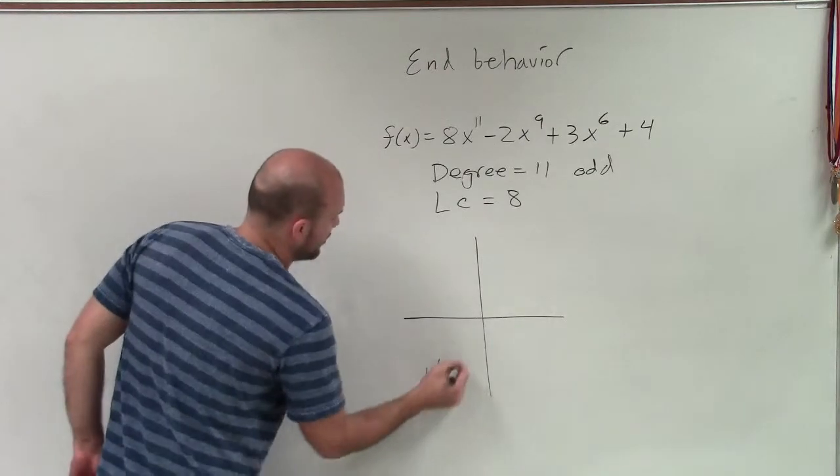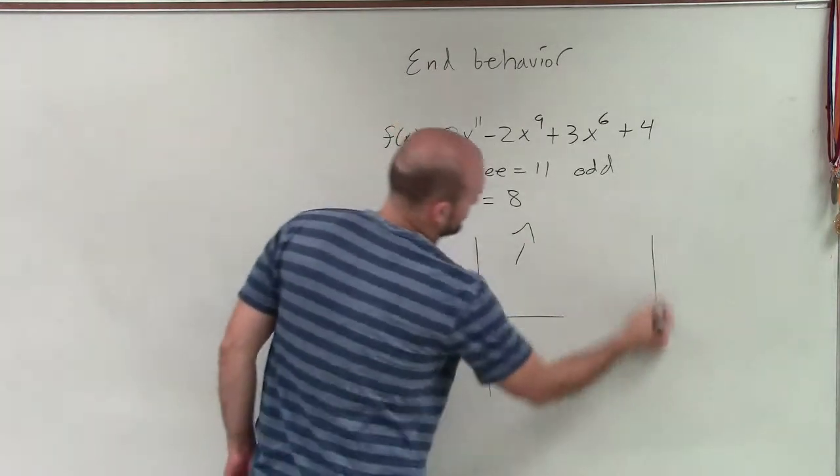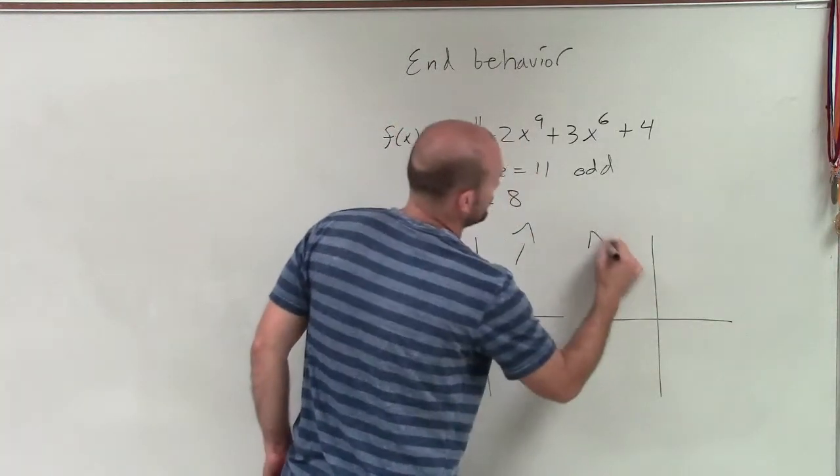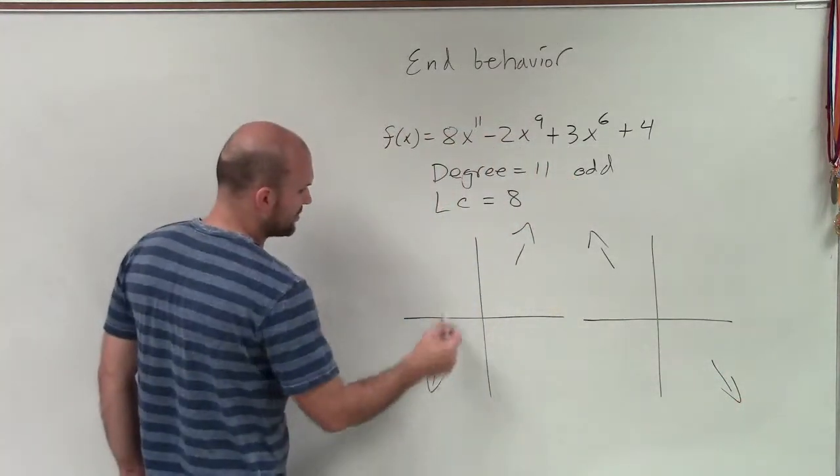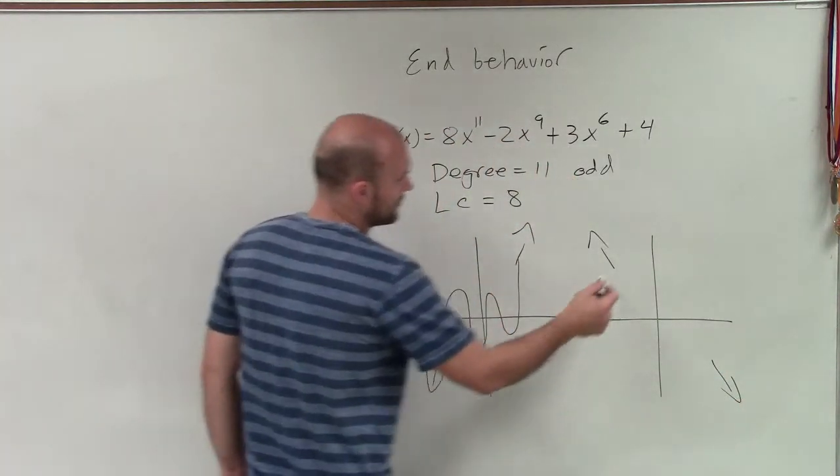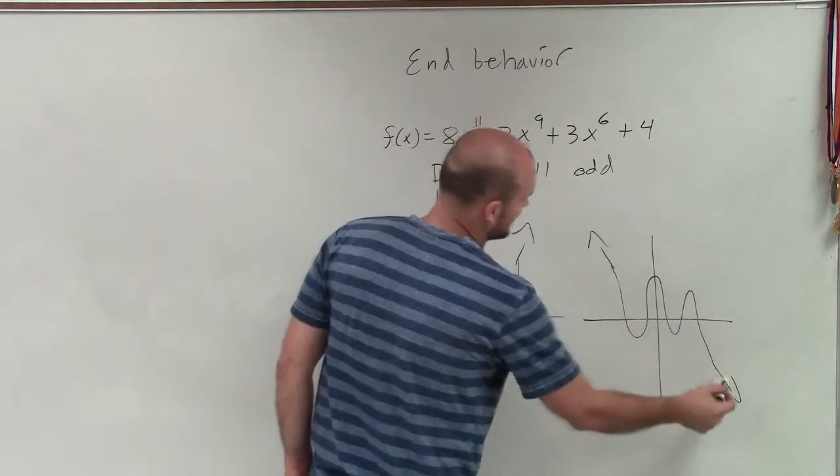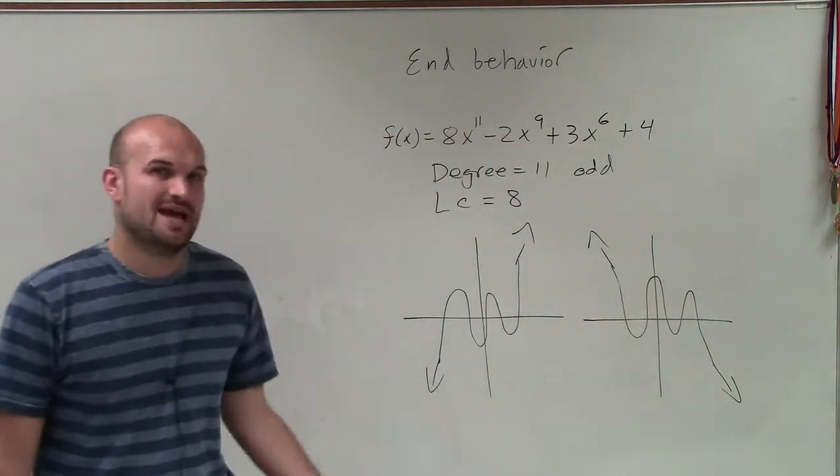My graph is either going to fall left, rise right, or my graph is going to rise left and fall right. Now, there can be any sorts of graph or little hoops and turning points that can happen in between the end behavior.